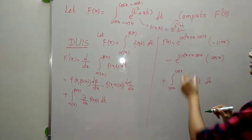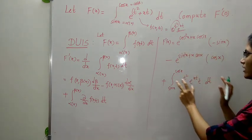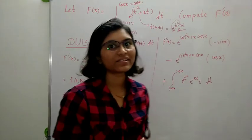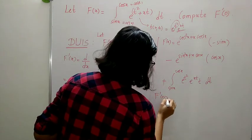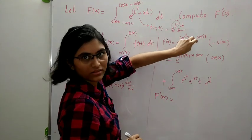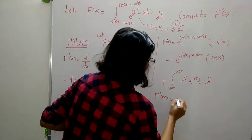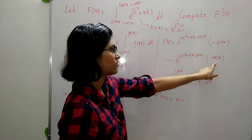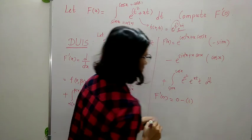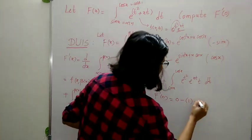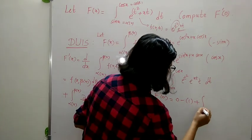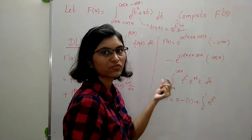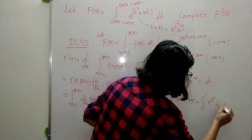Now, the important thing is that instead of calculating all this in general, just put x = 0 because we want to compute f'(0). When we put x = 0: cos(0) = 1 and sin(0) = 0, so the first term becomes e^(1 + 0) times (−0) = 0. The second term: e^(0 + 0) times cos(0) = 1 times 1 = 1, giving −1 due to the minus sign. For the integral term, e^(x·t) at x=0 is e^0 = 1.